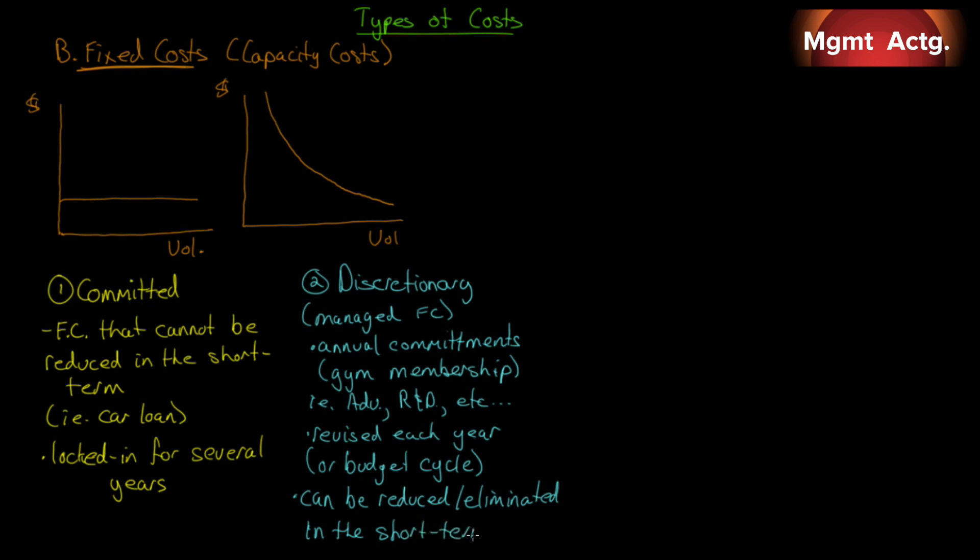And the short term is tomorrow. Tomorrow, you can't get out of your gym membership tomorrow. You can't get out of a car loan tomorrow. Discretionary means you can get out. Now, let's get back to that relevant range. Notice that a fixed cost jumps over a period of time. As capacity increases, as you hit capacity, you have to continue to add capacity. That's why a fixed cost is sometimes called the capacity cost. Well, these come in big chunks. So when we talk about fixed cost being constant, we usually mean over some relevant range. Within some relevant range, they're constant.